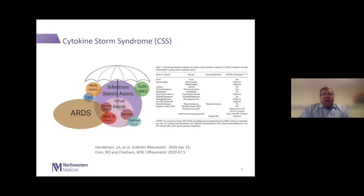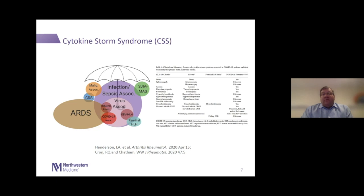On this slide I've pulled graphics from recent papers. The cartoon on the left shows the constellation of syndromes under this umbrella, from macrophage activation syndrome associated with systemic JIA on the right, to the associated cytokine storm syndrome seen with COVID-19 shown in the red circle on the bottom. The table on the right shows features of COVID-19 that share similarities with HLH.